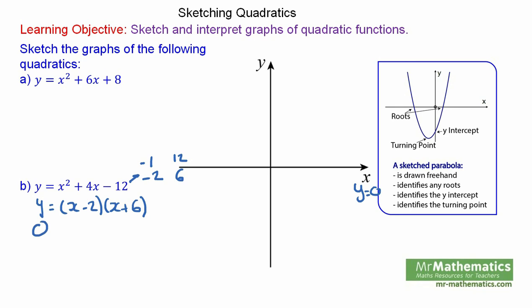Again, the roots are when y equals 0. So 0 will be when x equals 2 and negative 6. Sketching these along the axis we can have positive 2 and negative 6.